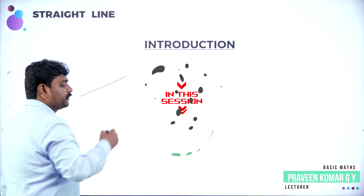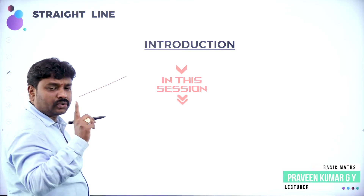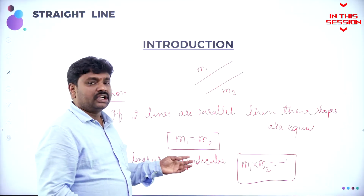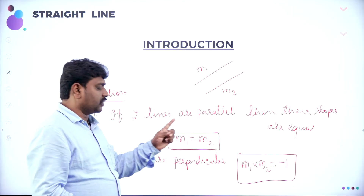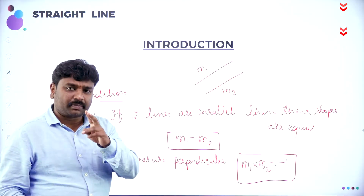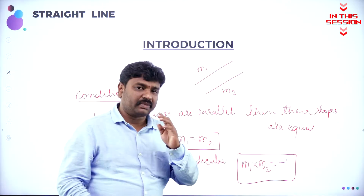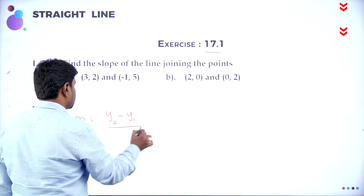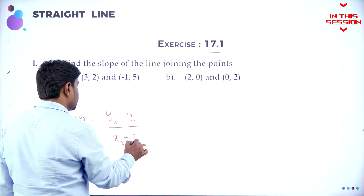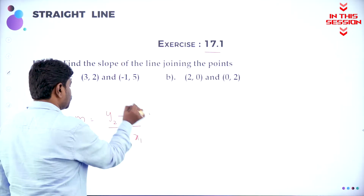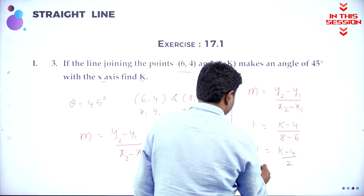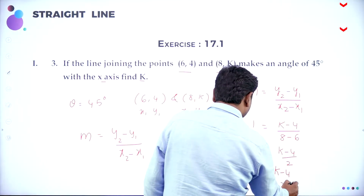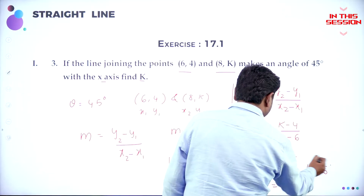To draw a line, minimum 2 parameters are required. If 2 lines are parallel, then their slopes are equal. If 2 lines are perpendicular, then the product of slopes is minus 1. The slope formula is Y2 minus Y1 by X2 minus X1. Cross multiply: 2 is equal to K minus 4, or K is equal to 2 plus 4, giving K value as 6.